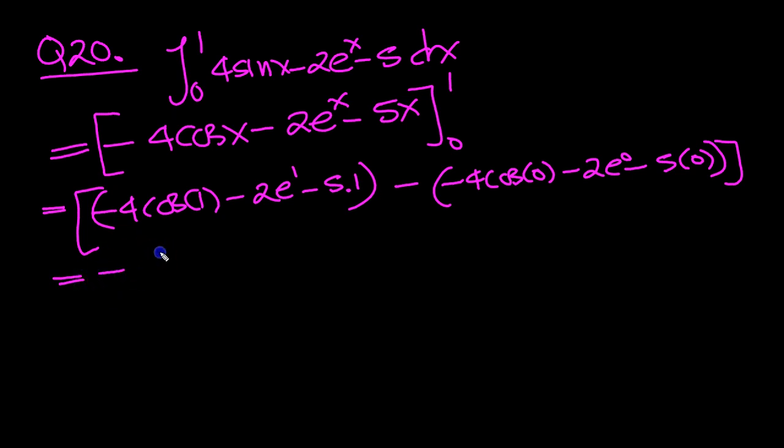So, that equals then, minus 4 cos 1, minus 2 lots of e, minus 5. That's your top value. Take away cos 0 is 1, so that's minus 4. e to the 0 is 1, so that's minus 2. 5 times 0 is 0, so that's 0.